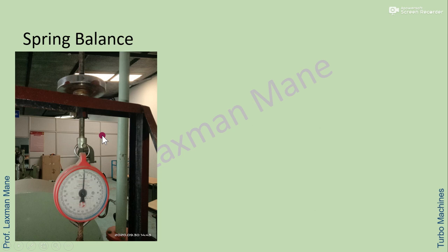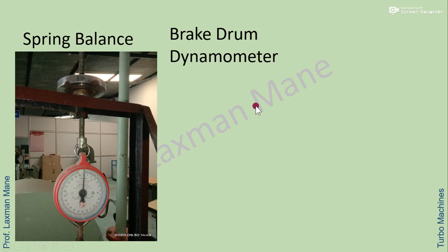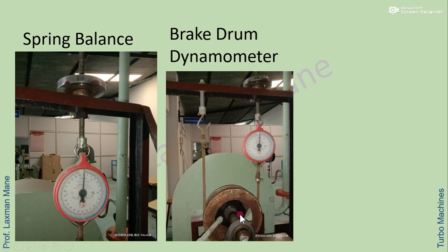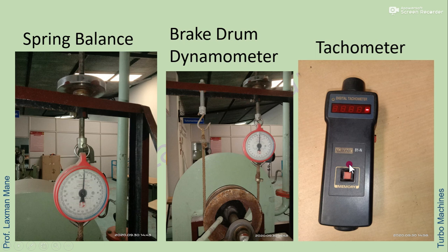The test is conducted at different loads. A spring balance is used to apply the load; rotating the wheel applies load and a pointer shows the load in kg, moving clockwise as loading increases. A brake drum dynamometer is used to measure torque of the turbine, consisting of a hook, a rope around the drum, connected to the spring balance. A tachometer measures the speed of the turbine by pointing its light at the rotating shaft.